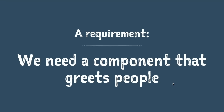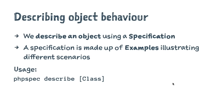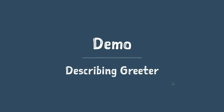We start with a requirement: the sales team has decided that if the home page says hello to customers, we'll get better conversions. So we need a component that greets people — a hello world example. We start by describing the object. In TDD we'd call this writing a test, but in PHPSpec we make a specification containing examples of how the object behaves. The command is: php spec describe.